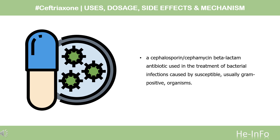Pharmacodynamics. Ceftriaxone is a cephalosporin/cephamycin beta-lactam antibiotic used in the treatment of bacterial infections caused by susceptible, usually gram-positive, organisms. Ceftriaxone has in vitro activity against gram-positive aerobic, gram-negative aerobic, and anaerobic bacteria. The bactericidal activity of ceftriaxone results from inhibition of cell wall synthesis, mediated through ceftriaxone binding to penicillin-binding proteins (PBPs). Ceftriaxone is stable against hydrolysis by a variety of beta-lactamases, penicillinases, cephalosporinases, and extended-spectrum beta-lactamases. Resistance to ceftriaxone usually occurs through beta-lactamase hydrolysis, altered PBPs, or reduced bacterial cell permeability. Ceftriaxone should not be mixed with or given in the same IV line as solutions or products containing calcium, as they may cause ceftriaxone to precipitate. Ceftriaxone use may also cause biliary sludge or gallbladder pseudolithiasis.